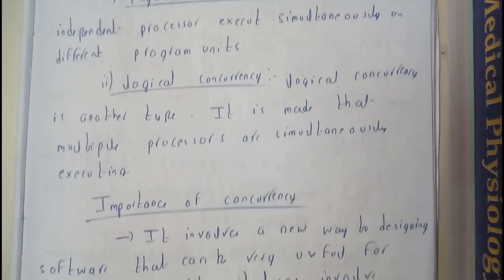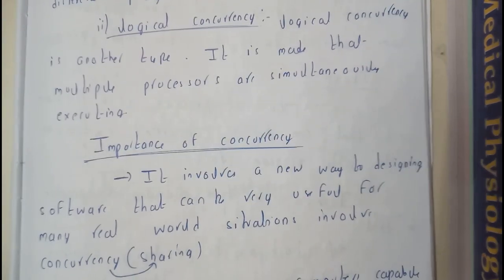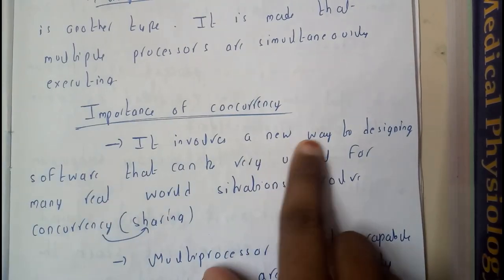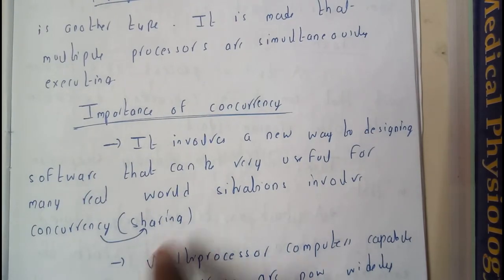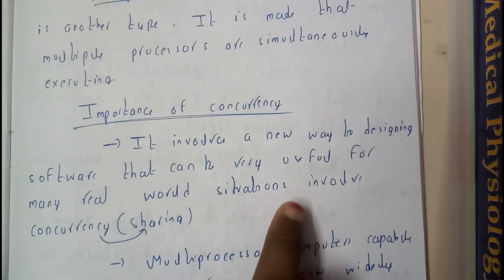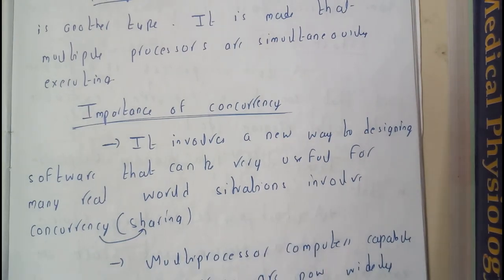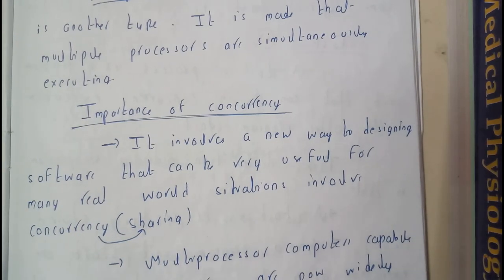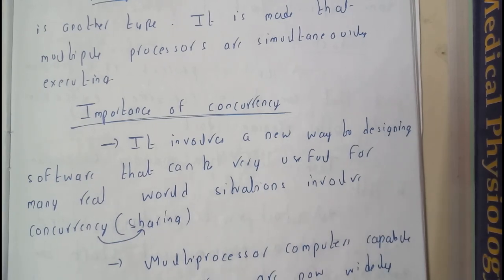What is the importance of concurrency? It involves a new way to design software that can be very useful for many real world situations involving concurrency. Concurrency is also a type of sharing of data between different processors.